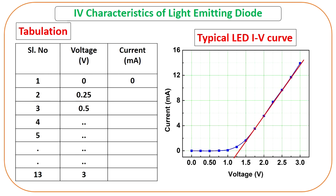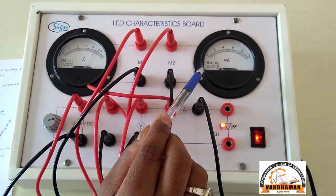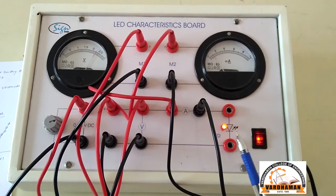At a particular value of voltage, there is a deflection in the ammeter and the LED starts glowing. After getting the table, we plot the IV graph with voltage on the x-axis and current on the y-axis. We then draw a tangent from the rising portion of the curve and note where it cuts the x-axis — that value of voltage is the threshold voltage. In this experiment, our threshold voltage is 1.75 volt, because at that particular voltage the ammeter shows a reading and the LED starts glowing.